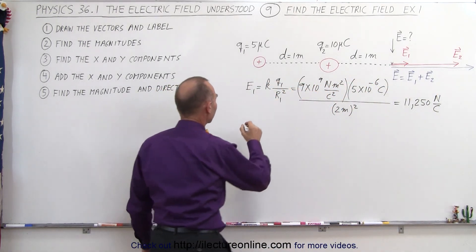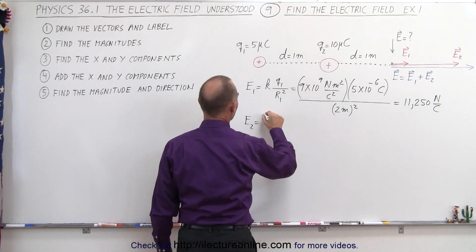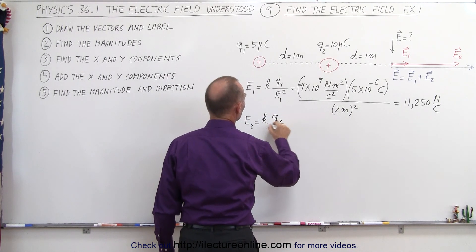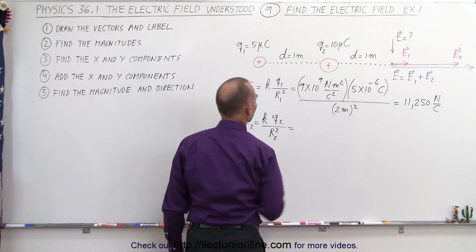Now we do the same for E2. So E2 is equal to k times q2 divided by the distance to that charge squared.